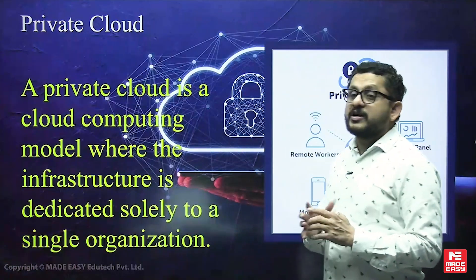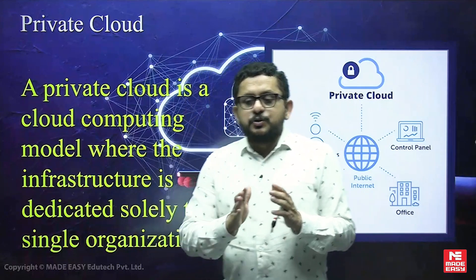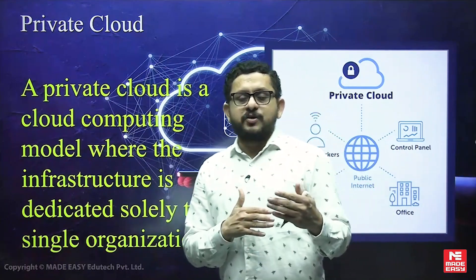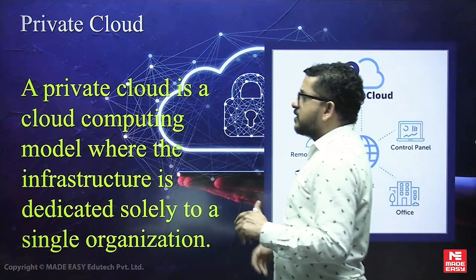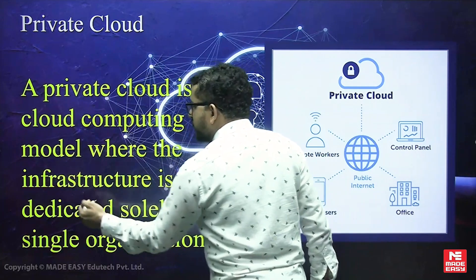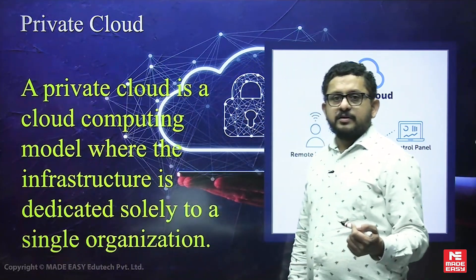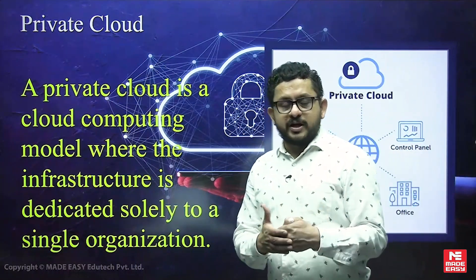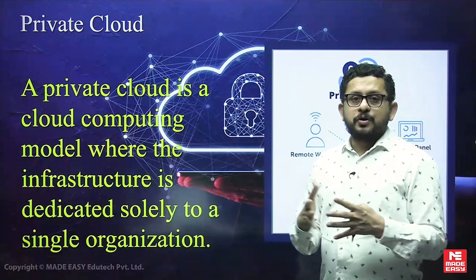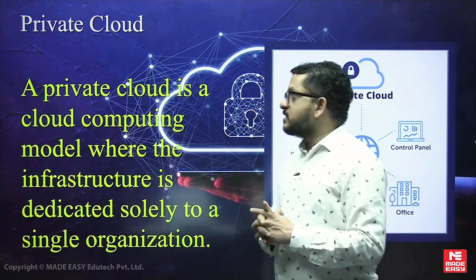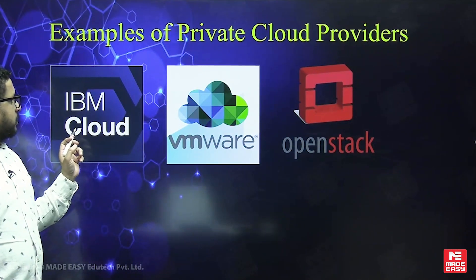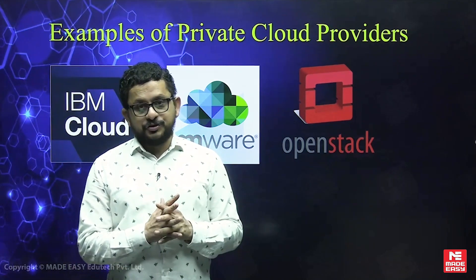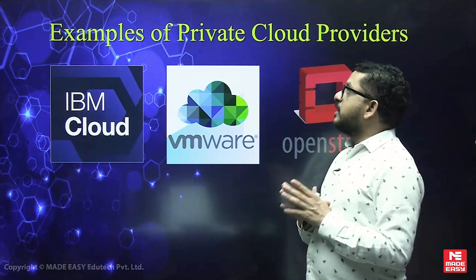The second type is the private cloud. Private cloud means services are used by a single organization, providing more security and more control. It is like using your own car. In this model, the cloud computing infrastructure is dedicated exclusively to a single organization, providing greater security and control over the cloud service. Examples include IBM Cloud, VMware, OpenStack, and Microsoft Azure.